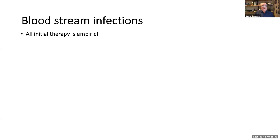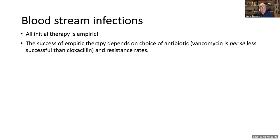All initial therapy of bloodstream infections is empiric because you cannot afford to wait for AST results. No method today allows advising on therapy as the patient comes through the door in the ER. The success of empiric therapy depends on antibiotic choice. For example, vancomycin is a rather poor antibiotic compared to IV cloxacillin. The success rate of IV cloxacillin on a Staphylococcus aureus septicemia is roughly 95%, whereas vancomycin achieves around 80–82%.